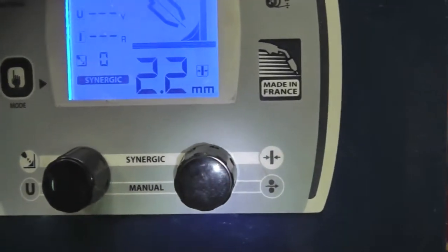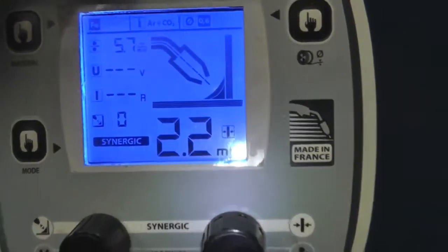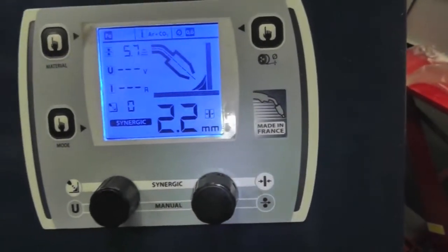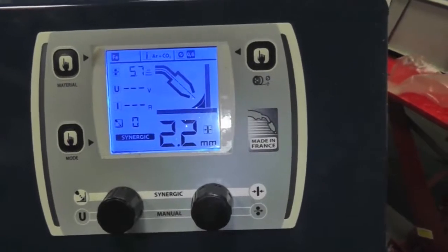We're on our 0.8 wire. Like I say mild steel with Argon CO2 mix. And it's just a matter of welding. So let's do a little weld and see how it welds.